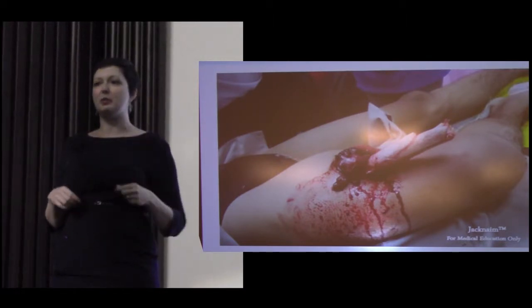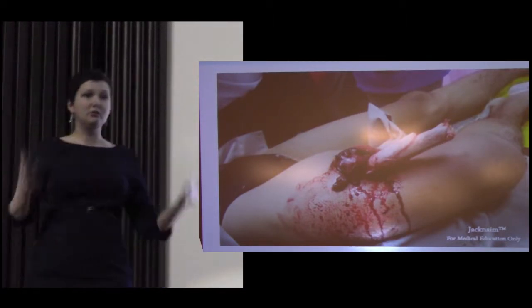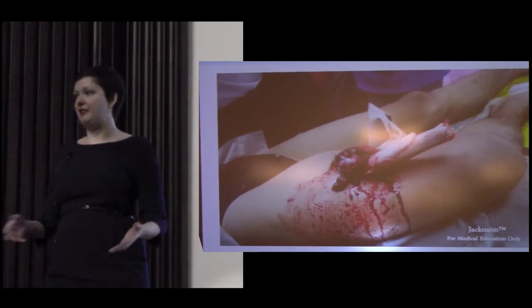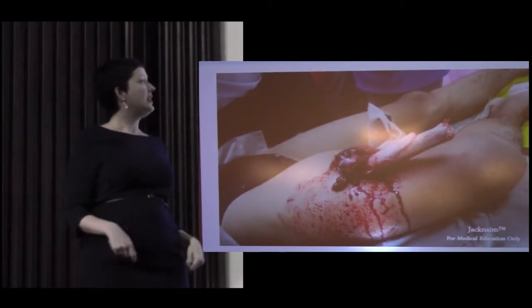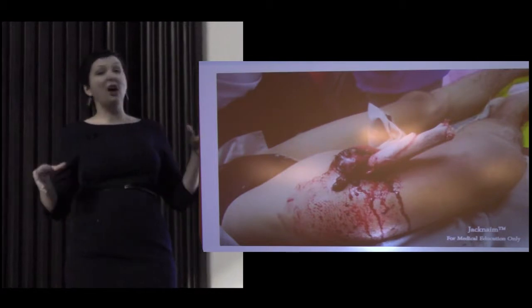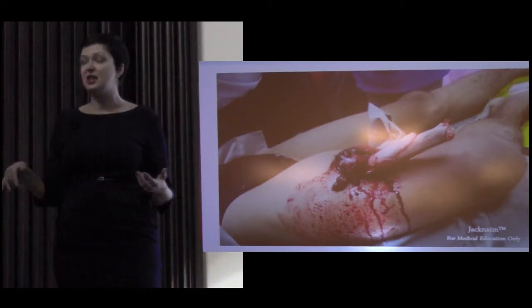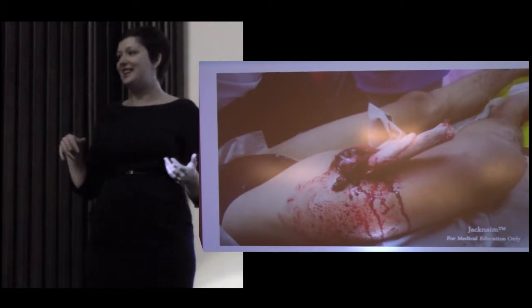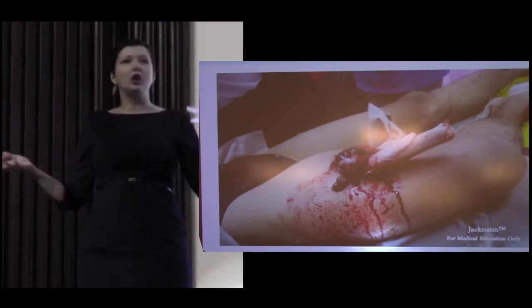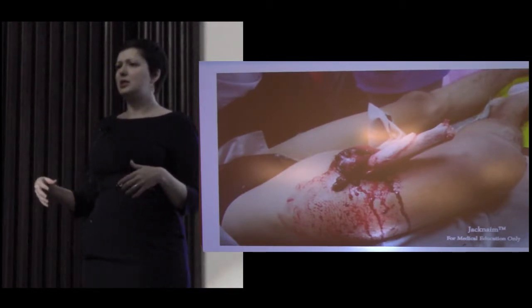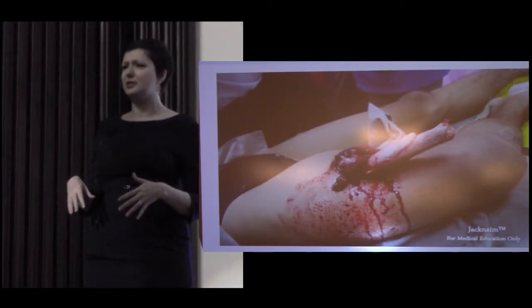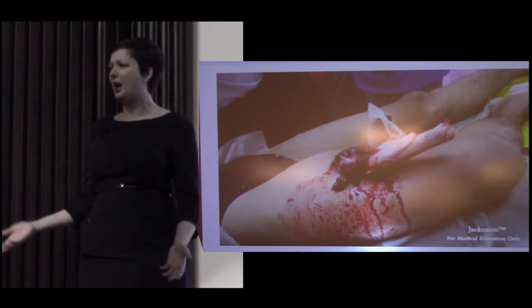And you go back to your primary survey. FAST exam is negative, his pelvis is pretty stable. Ortho's there at this point, they're playing with his toes. His right arm is a little deformed. If you go to roll him, he moans, his eyes kind of close and he sort of mumbles, 'Where am I?'